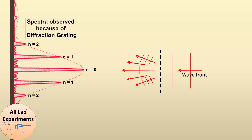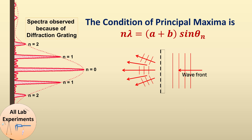The condition for principal maxima is: nλ = (a + b)sinθₙ, where n is the order of maxima and λ is the wavelength of light used. If n is constant and (a + b) is fixed for a given grating, we can understand that if we increase the wavelength, the deviation of light will also increase.